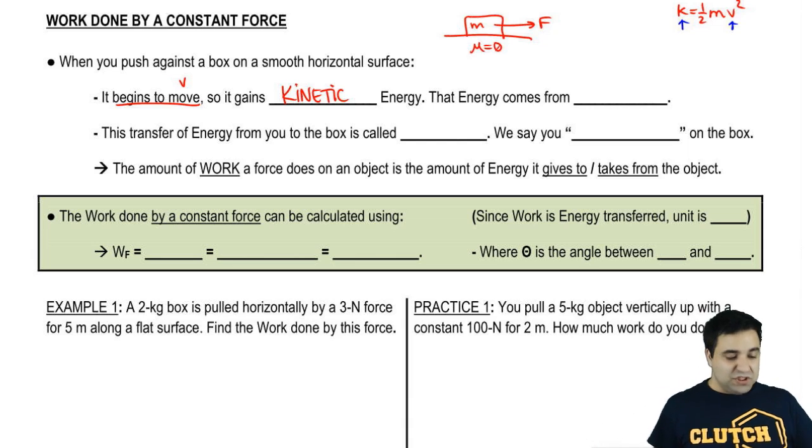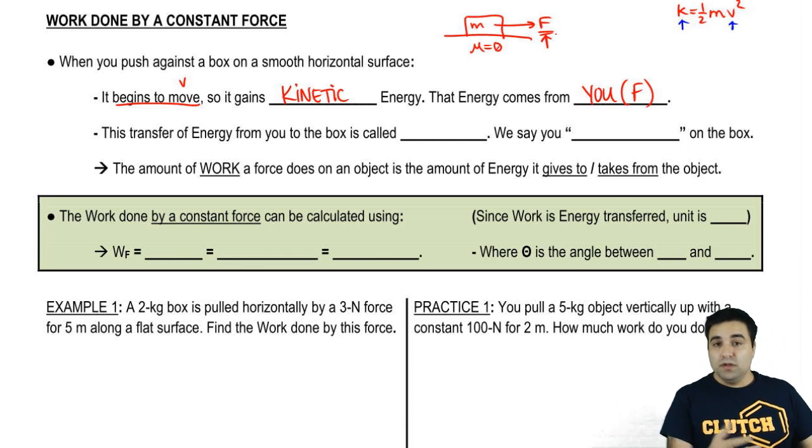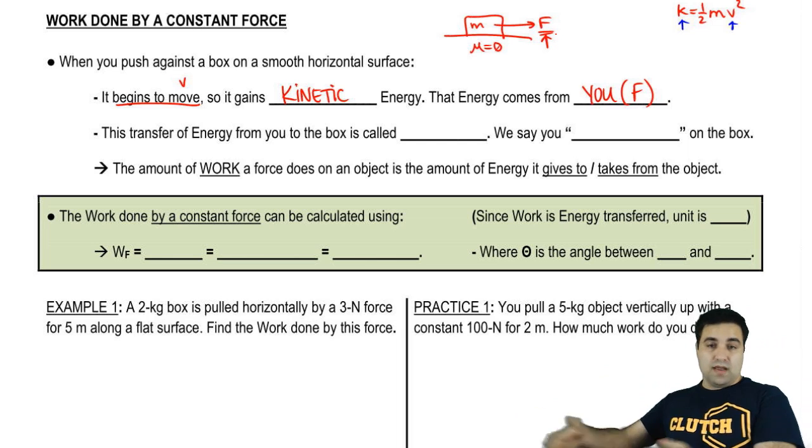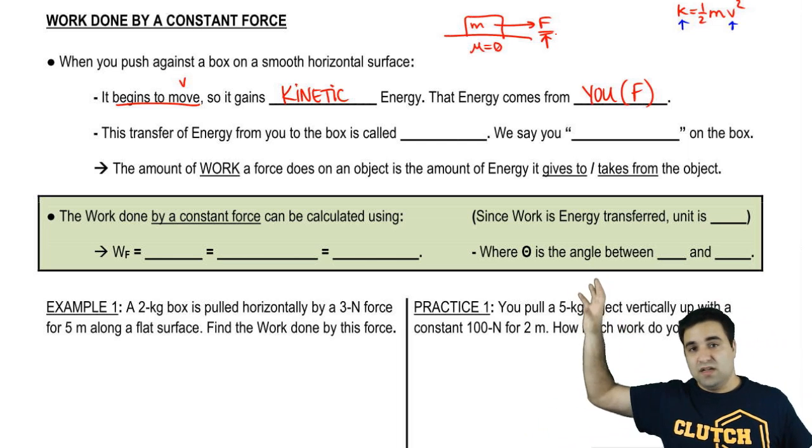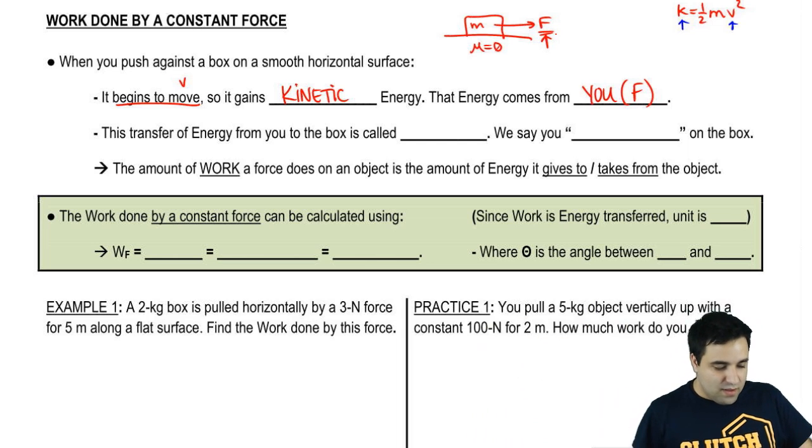Well, where does that energy come from? That energy comes from you, from your push, from F over here. So that energy comes from you. You ate some food, and the energy ultimately comes from the sun, right? The sun gives energy to the plant, the cow eats the plant, and you eat the cow, and then you push this box. Very simplistic, but that's basically the idea.